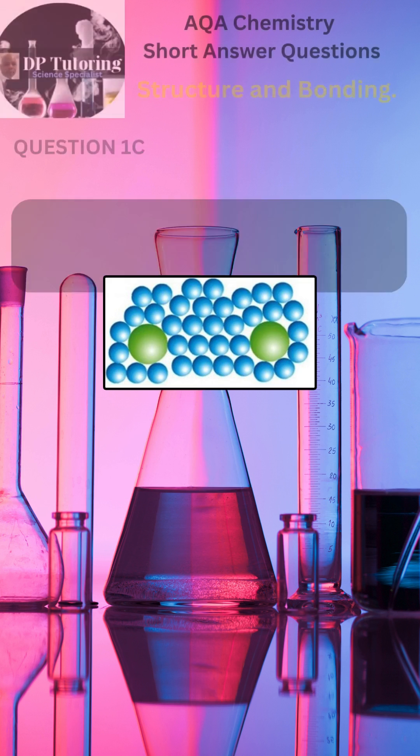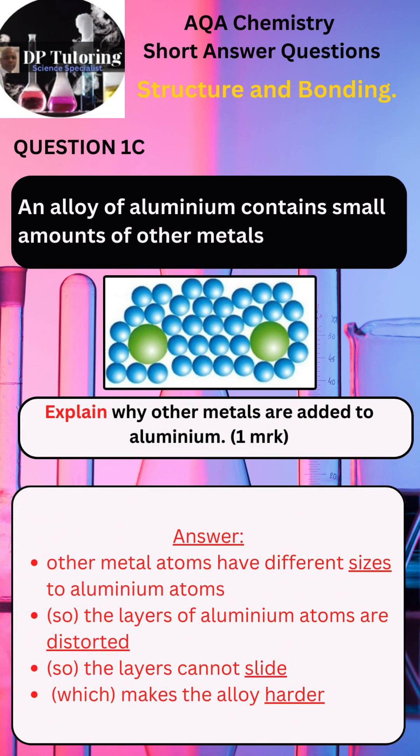The answer for Part C is on the screen. Please pay attention to the underlined words — those are the key words that must be included in your answer. Other metal atoms have different sizes to aluminium atoms, so the layers of aluminium atoms are distorted, so the layers cannot slide, which makes the alloy harder.